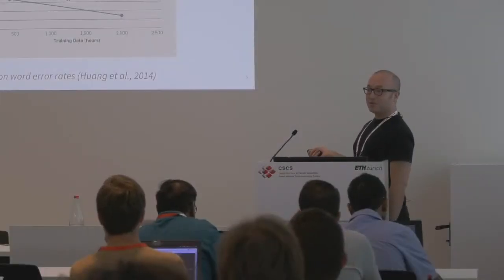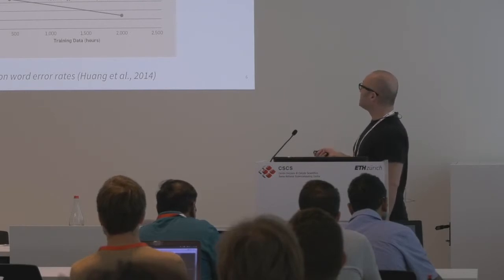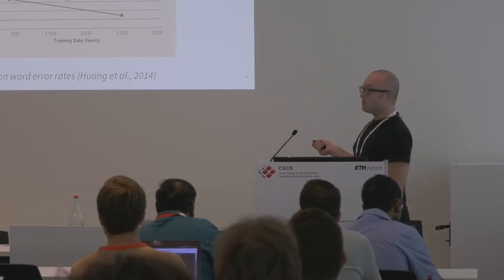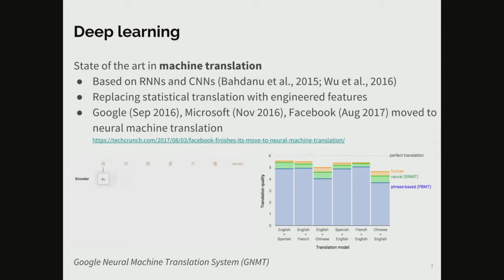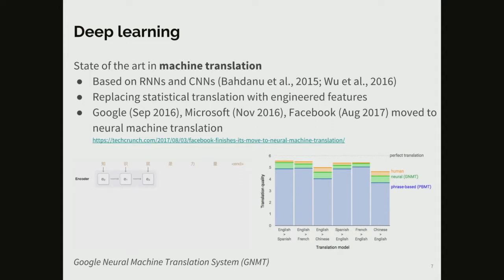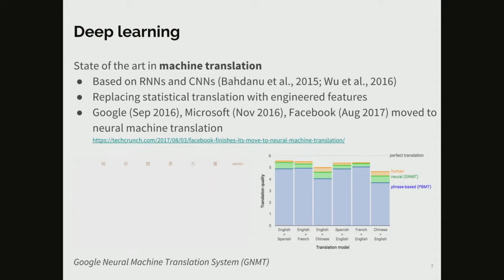This is also the case with speech recognition. Previously people were using statistical methods based on hidden Markov models and Gaussian mixture models. Again, deep learning systems starting around 2012 applied neural networks trained with lots of data and surpassed the previous state of the art. Another interesting application is machine translation, based on recurrent neural networks or convolutional neural networks — again replacing the previous hand-engineered statistical translation pipeline.